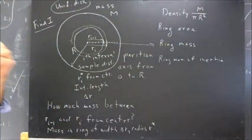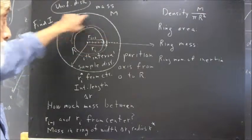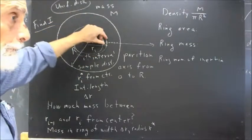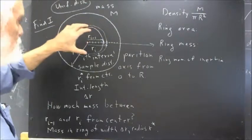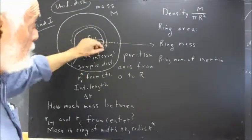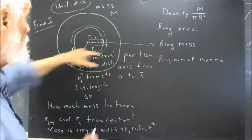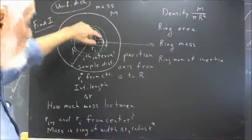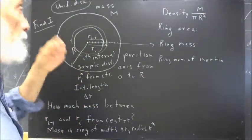Well, the area of the ring is a circumference times its thickness, because if we took this ring and cut it out and cut it at any point and spread it out, it would have a length equal to the circumference and a width equal to the thickness delta R.